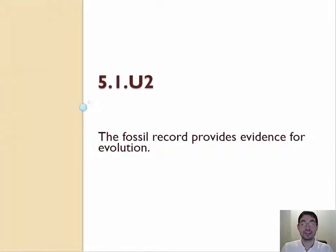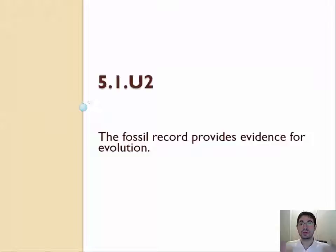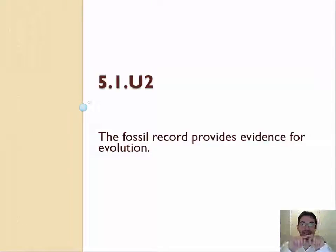The fossil record provides evidence for evolution. You need to know that fossils show species that no longer exist, which means that species on earth have changed over time, and they show intermediate species — species between two that live today. For example, humans did not evolve from chimpanzees. A chimpanzee will never turn into a human. That said, humans and chimpanzees share a common ancestor.